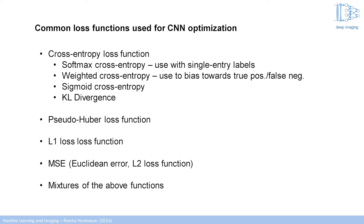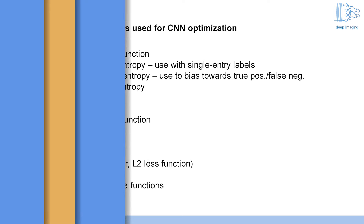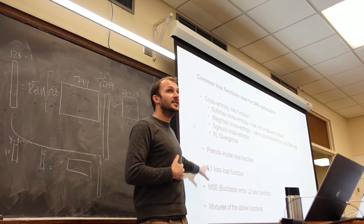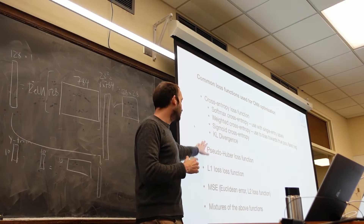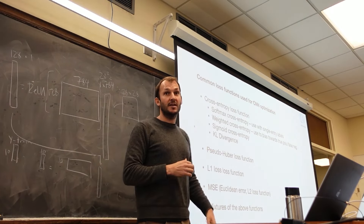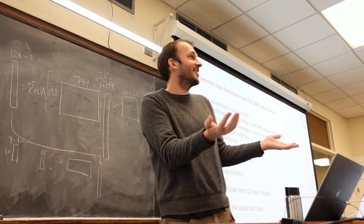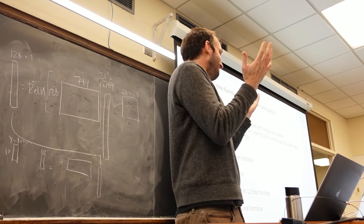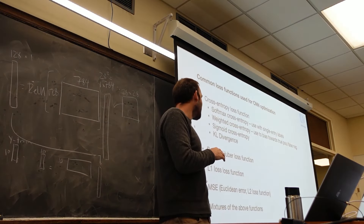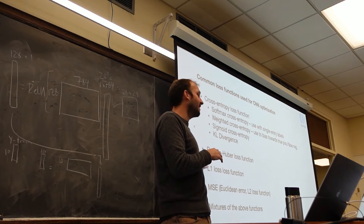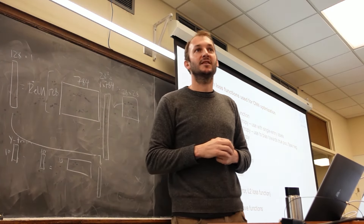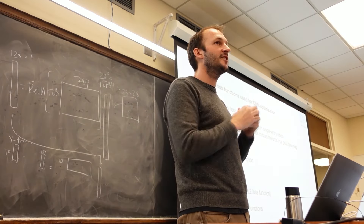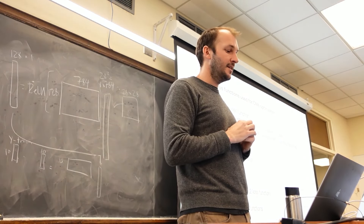As you get into segmentation and object detection for your final project, you'll want to use some other loss functions. There's always mean squared error, and a combination of mean squared error and L1 loss can work for segmentation. Those are all simple one-liner changes. We'll stop there and pick up these last few things in the next class.